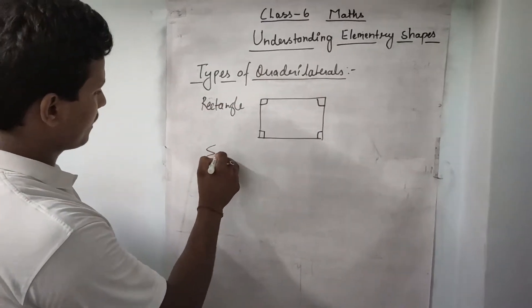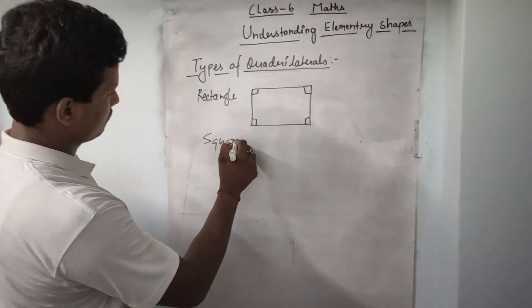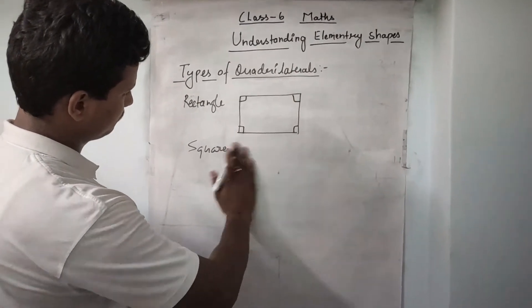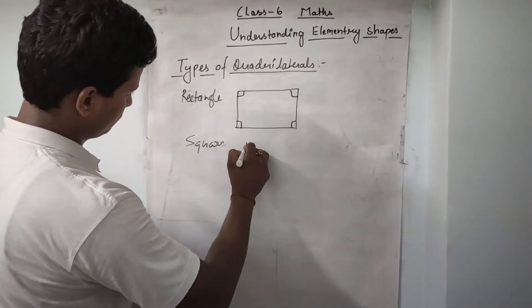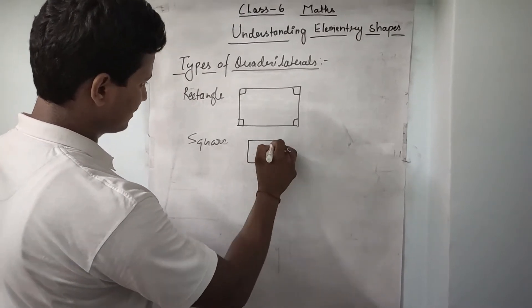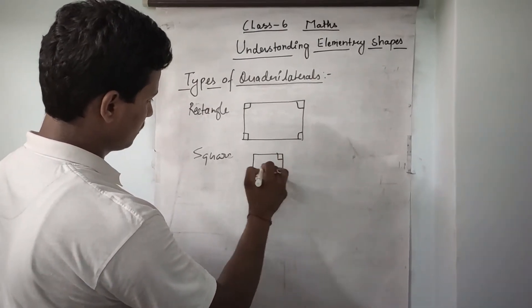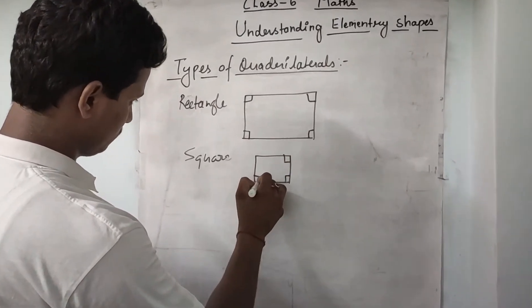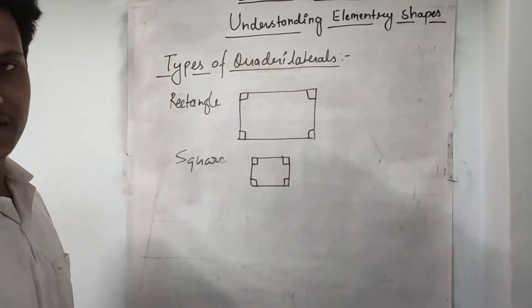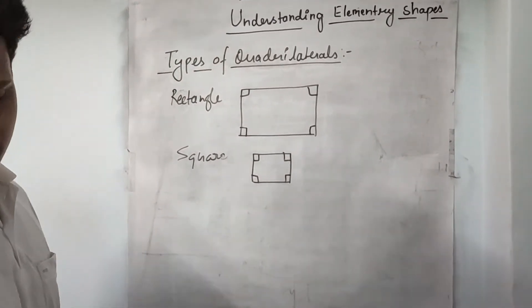Next is a square. All the sides are the same and all the angles are 90 degrees. This is called a square.